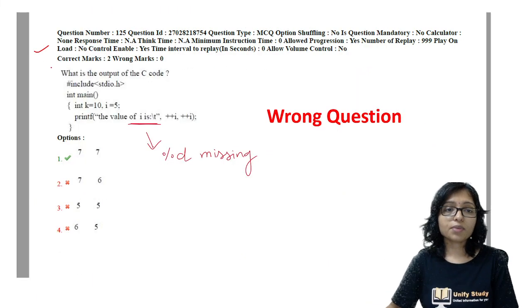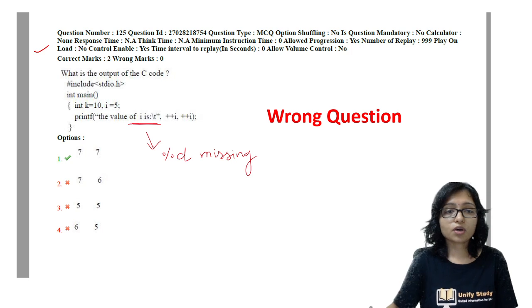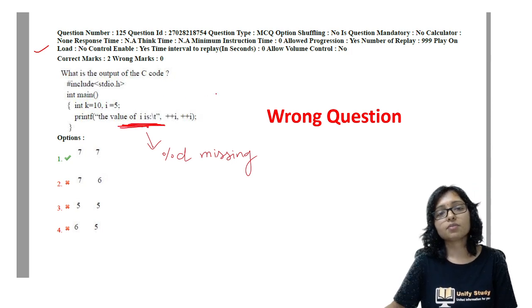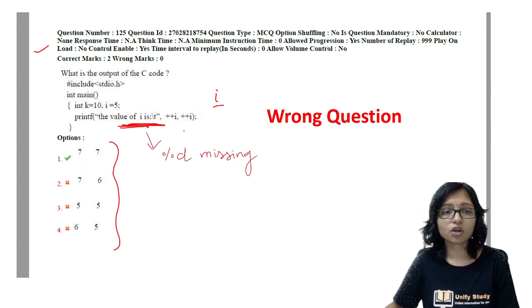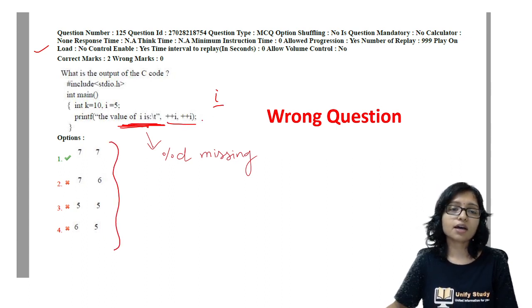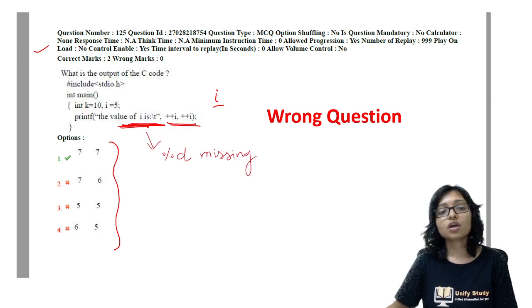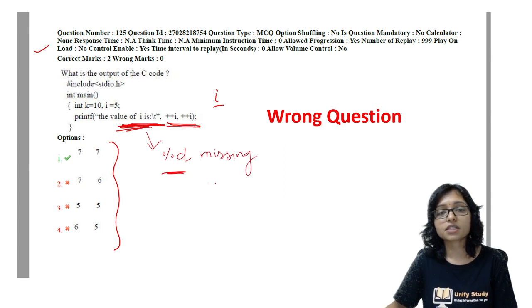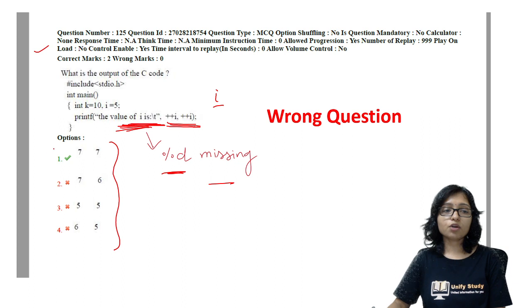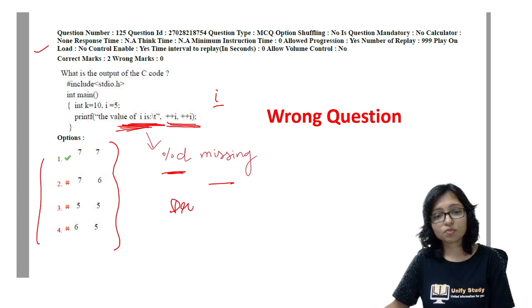Next one is this programming question, which is also wrong because here is no percent D. If there is no percent D, every time it will print only I. Any option will not be correct. It will print only I here. They did whatever according to this, but the original problem is here there is no percent D missing. So any option will not match. This question will also be dropped.